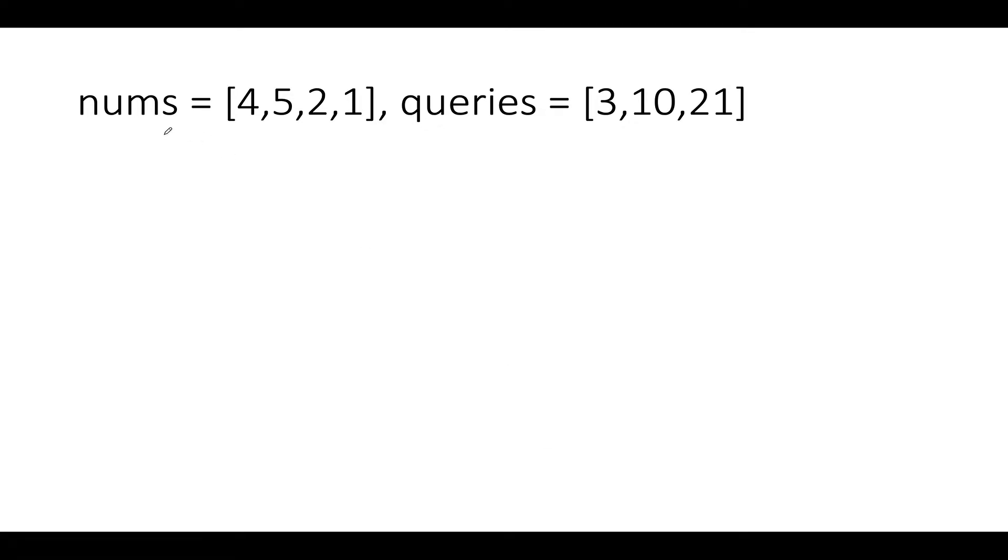In this question we are given two arrays: an array of integers called nums (in this case 4, 5, 2, 1) and a query array. You need to pull out each query value from this array and identify how many maximum numbers will sum together to give a value that is less than or equal to the query value.